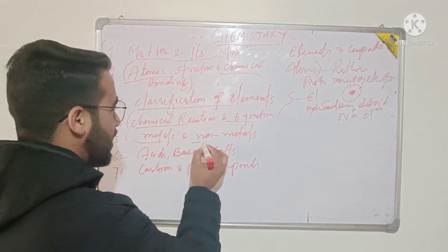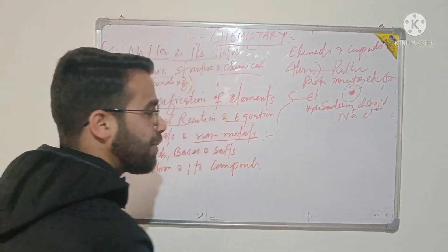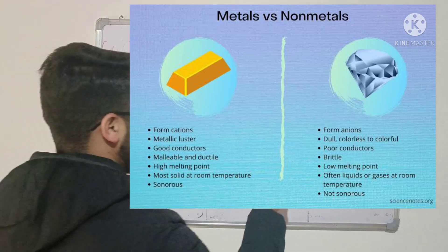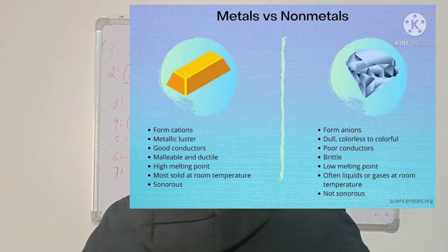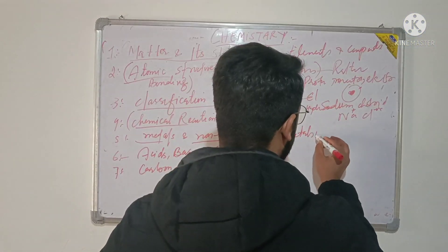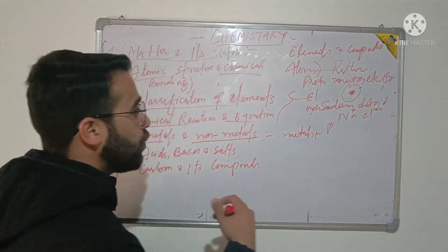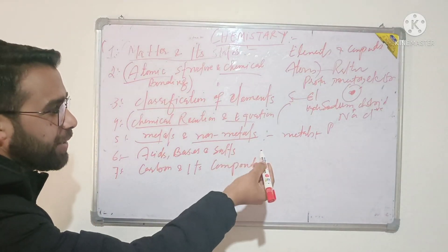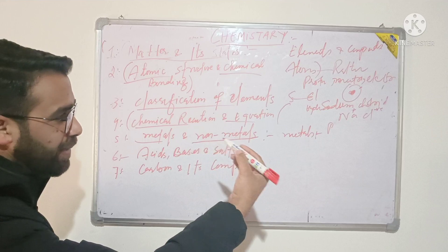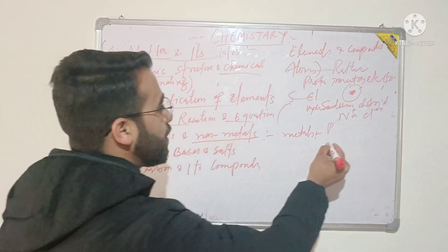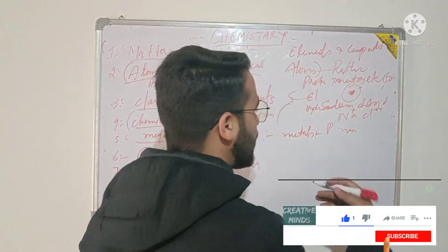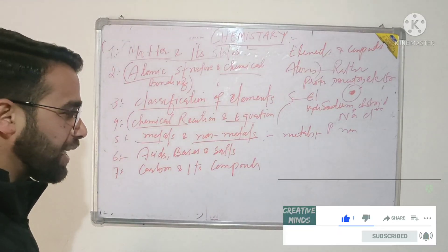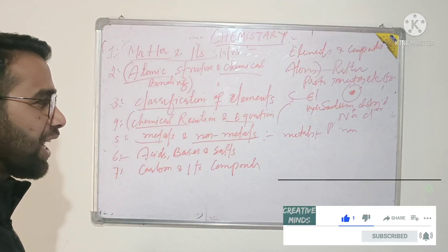Then you have metals and non-metals. Here you will study different types of metals, their physical properties and chemical properties. You will also study metalloids, non-metals and their physical and chemical properties, as well as metallurgy.